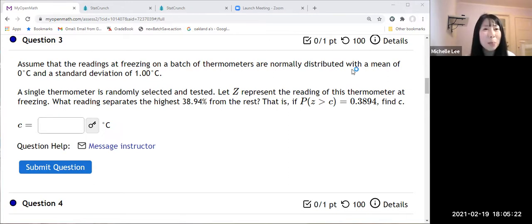Let Z represent the reading of this thermometer at freezing. What reading separates the highest 38.94% from the rest? So probability is given, 38.94%. If we make a decimal, that is 0.3894. Then how do we find the value, which is C in this case, by StatCrunch? Let me show you.